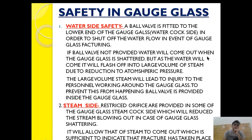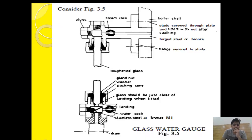First, let's see the water side safety. A ball valve is fitted to the lower end of the gauge glass water cock side in order to stop water flow in the event of glass fracturing. A stainless steel or bronze ball is provided in the lower section of the water cock so that if the glass fractures, this ball valve acts as a non-return valve to prevent water from gushing out.